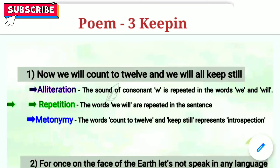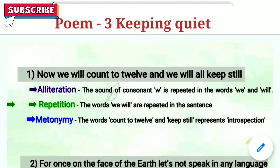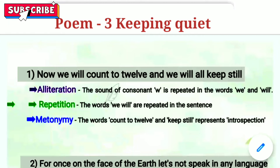First line: 'Now we will count to 12 and we will all keep still.' A very common figure of speech here is alliteration, because the sound of the consonant W is repeated. The second figure of speech is repetition — 'we will' and 'we will' are repeated two times.